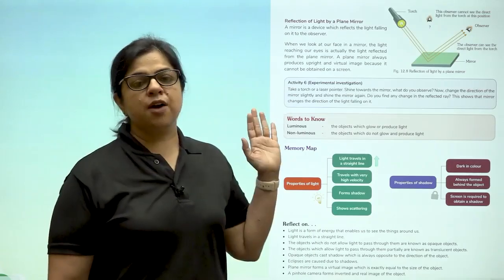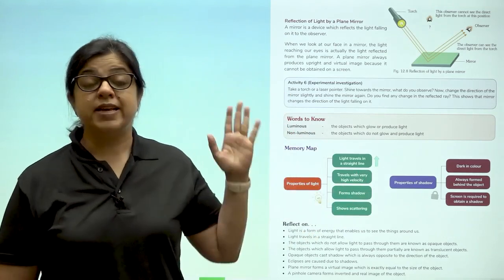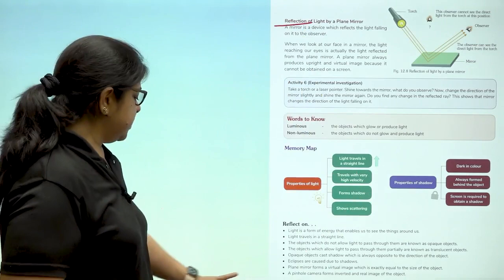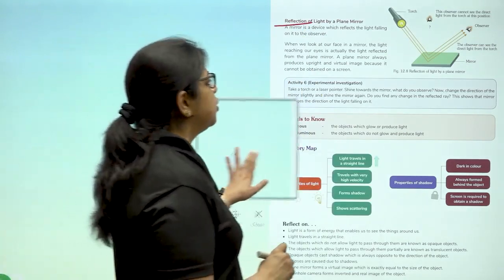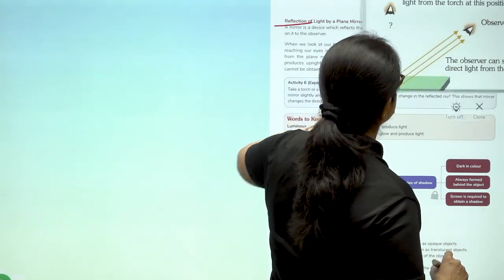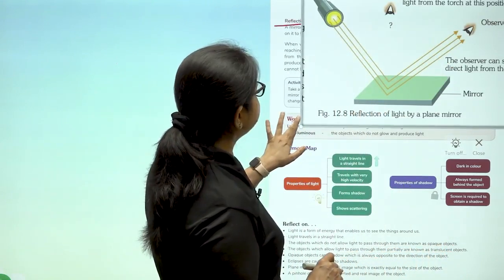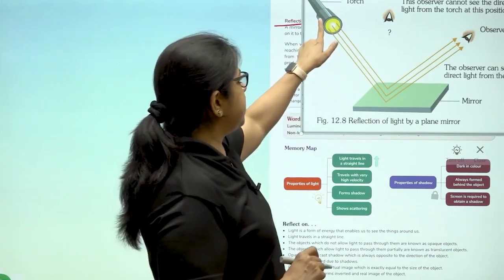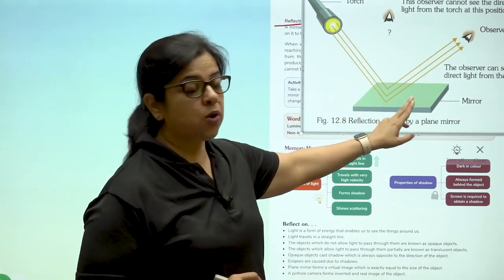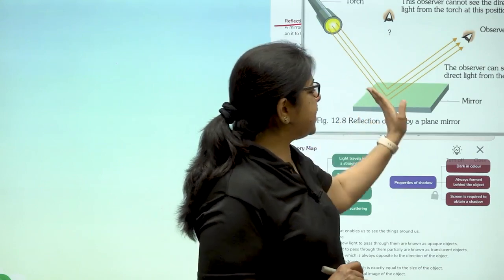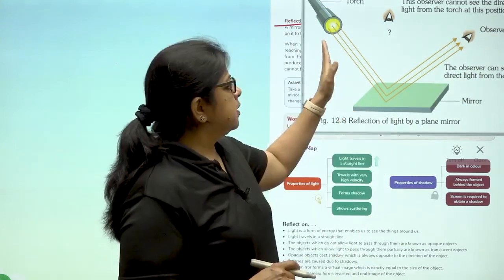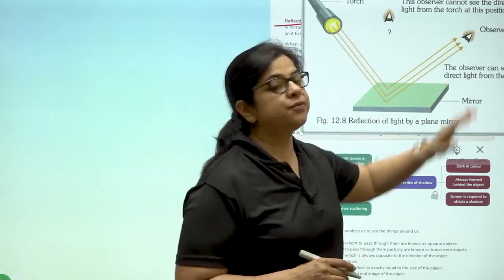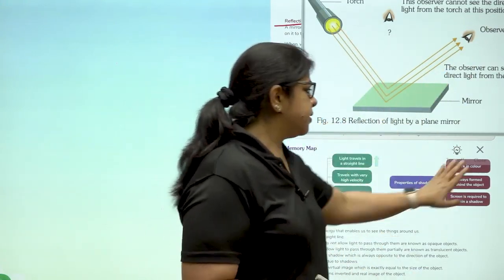So here children, after having understood light and shadows, let us understand reflection. What is reflection? If you closely look at the picture, you will see that when a beam of light is falling on this mirror, a beam of light coming from the torch is falling on the mirror when these rays are reflected. This is how you see your image in front of the mirror because the light is reflected by the mirror.